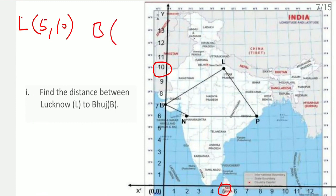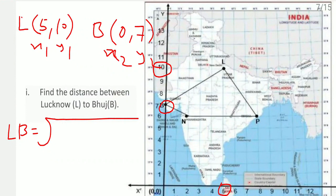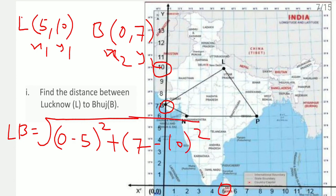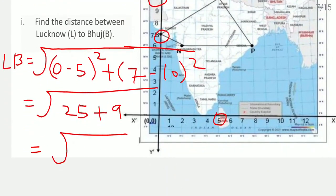Bhuj coordinates are 0 comma 7. Using the distance formula for the distance LB: x1=5, y1=10, x2=0, y2=7. So LB equals under root of (0 minus 5) squared plus (7 minus 10) squared, which equals under root of 25 plus 9, equals under root 34.